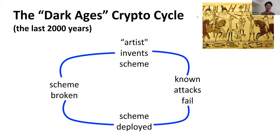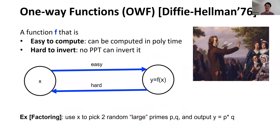Let me be very bold and summarize the history of cryptography in the last 2000 years. Our story begins with an artist who invents some scheme, people find all known attacks fail, the scheme is deployed primarily for military use, and finally this scheme will be broken by someone. It seems we have been going around in this cycle for a really long time, with no scheme proved to be secure. Diffie and Hellman in 1976 proposed the genius notion of one-way functions, which gives us a way to jump out of the cycle and brings us into the age of enlightenment.